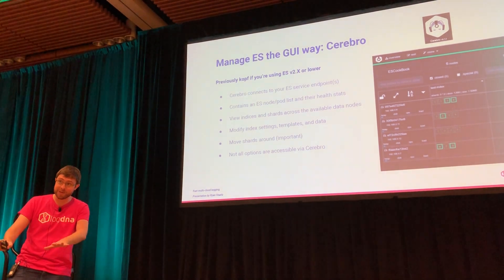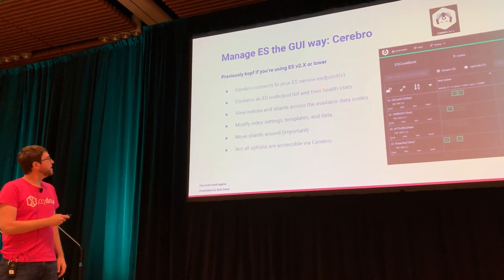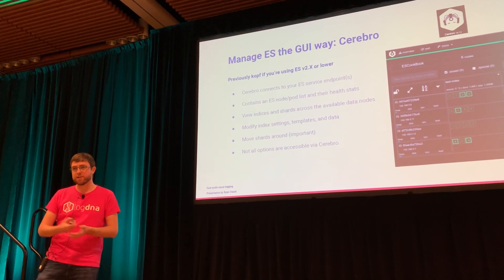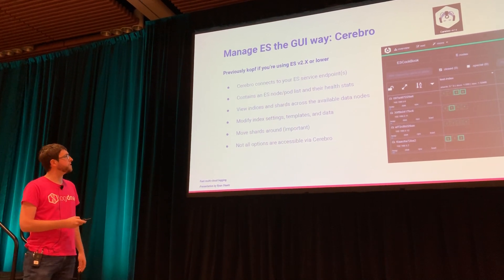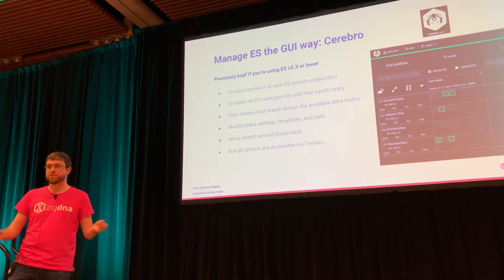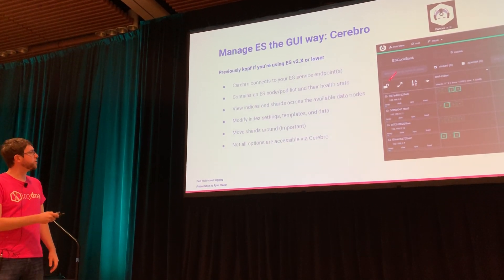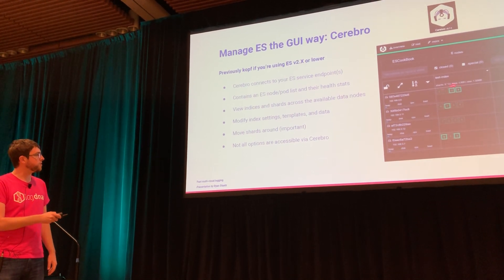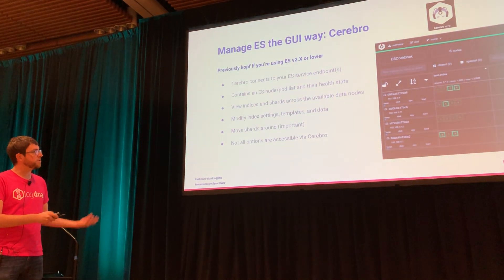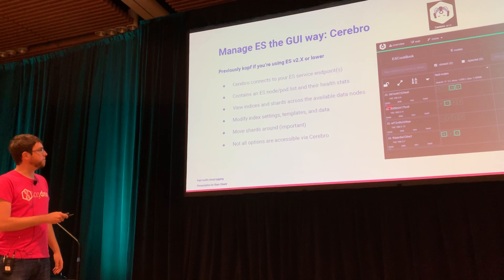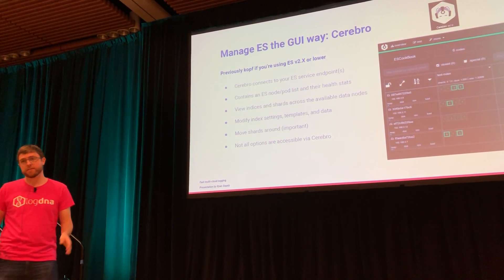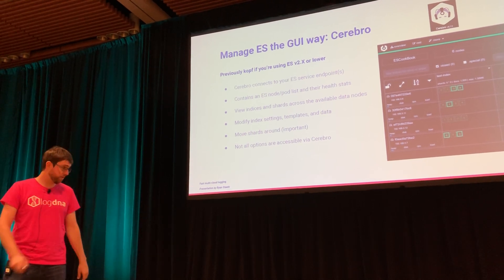Now that your cluster is set up, how do you manage it? We use Cerebro because we're using ES5. If you're using ES2 and lower, there's a similar tool called Kopf. Cerebro is nice in that you run a single pod, connect to your service endpoints for your masters, and switch between them as much as you want. It gives you a nice visualization of all the different indices, shards — the bright ones are primaries, dashed ones are secondaries — and the nodes themselves. You can move shards around and change settings, but not everything is doable through Cerebro.